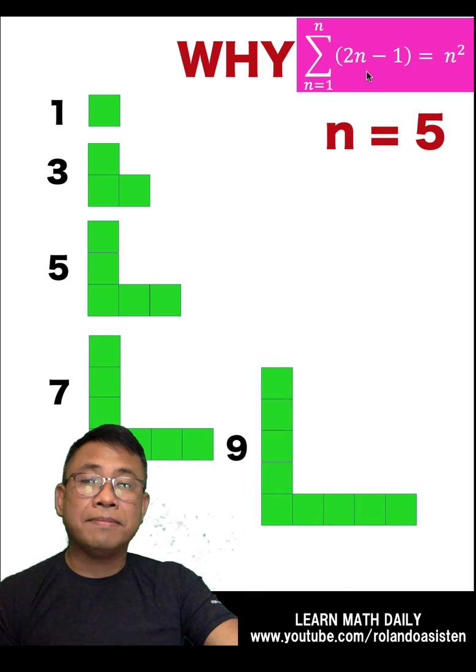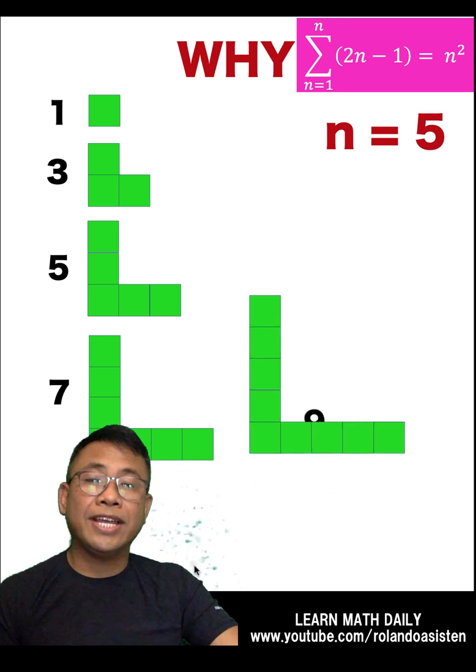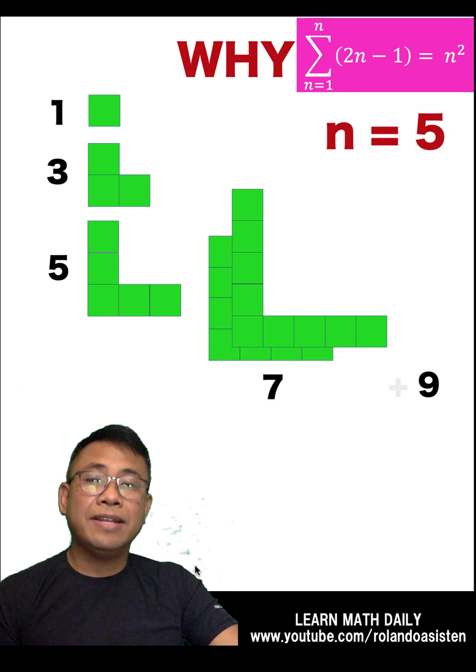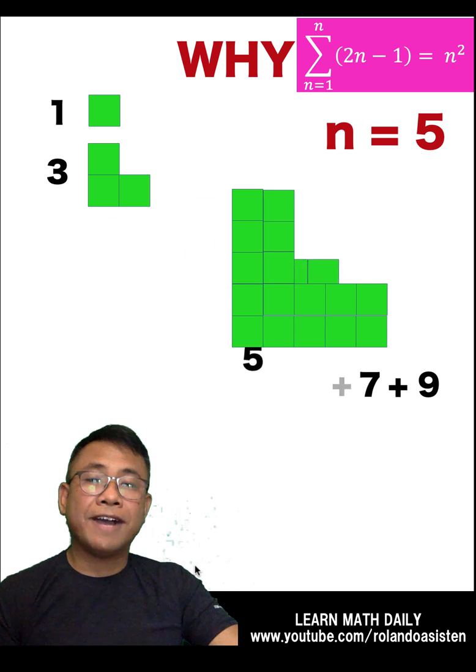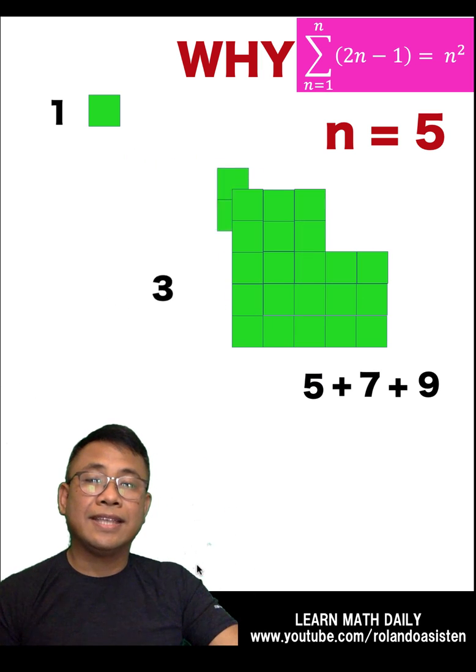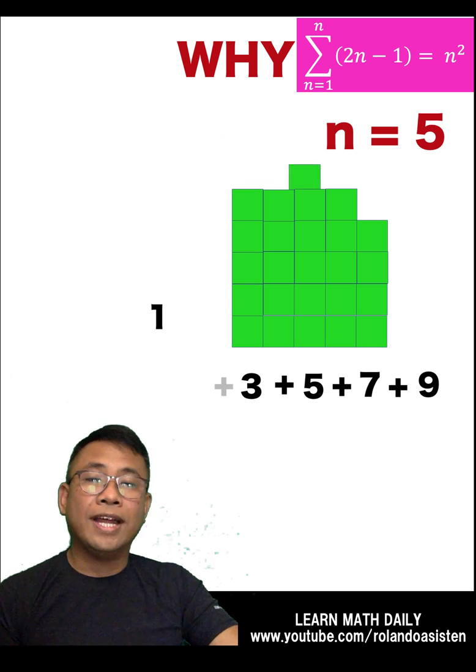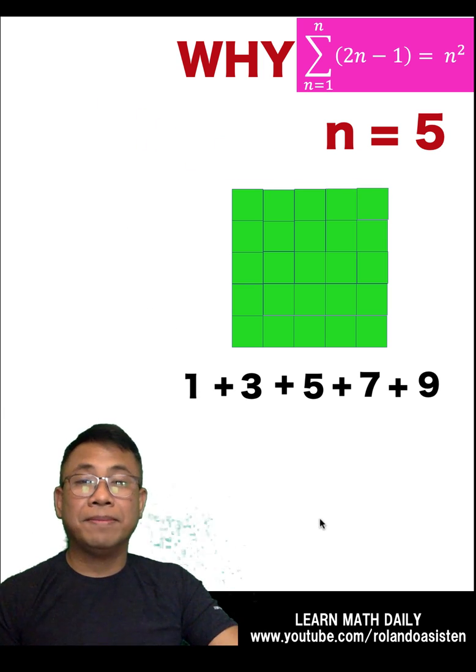Since we want to find the sum of these 5 odd numbers, then let's combine them all together. This is 7 plus 9. This is 5 plus 7 plus 9. This is 3 plus 5 plus 7 plus 9. And finally, 1 plus 3 plus 5 plus 7 plus 9.